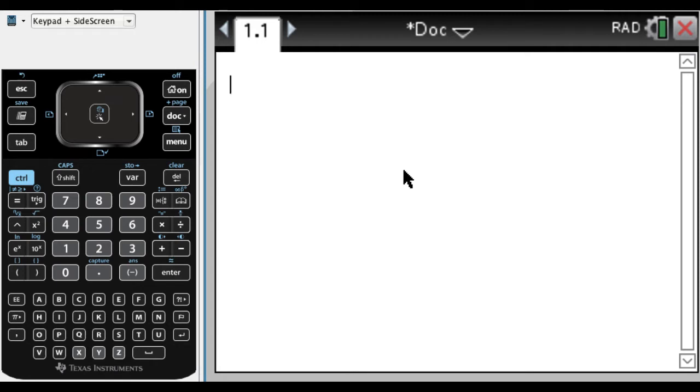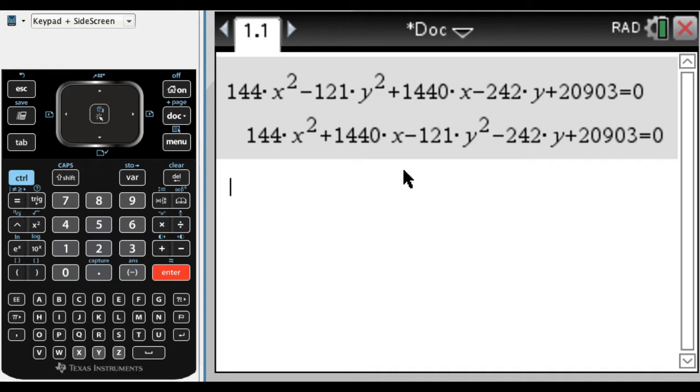What I'm talking about is something that looks like maybe 144x squared minus 121y squared minus 242y and then plus 20903. This definitely looks like something you don't want to mess with by hand. It equals 0, so what we want to do is put that into standard form.